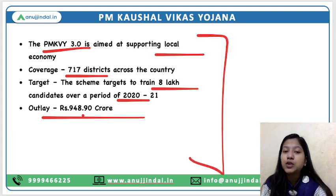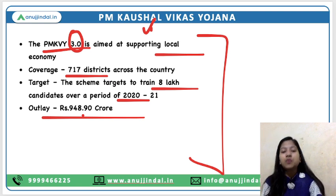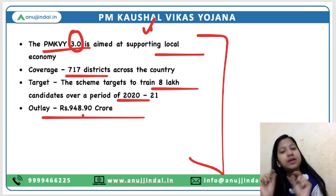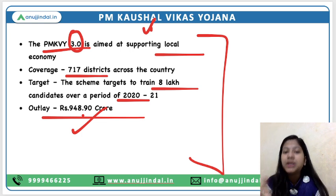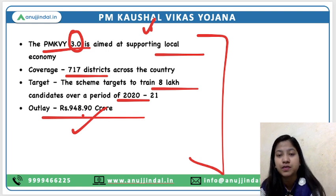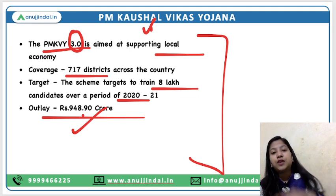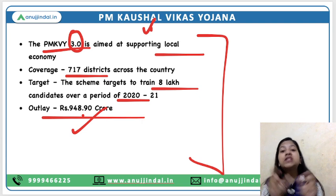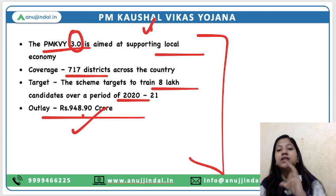All this information is very useful as far as PMKVY 3.0 is concerned. The outlay of 12,000 crore was the initial corpus of the entire scheme — that is important. The outlay of 3.0 at 948 crore is specifically for the third phase. The 10 million youth target was for 2015 to 2020 covering phase one and phase two, while in phase three the specific target is 8 lakh candidates over one year. Tenure, targets, and outlays of both versions are all important to remember.